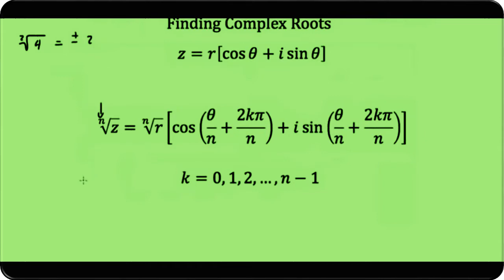Our formula for doing this: if I have the nth root of z, then we just take the nth root of our magnitude r. Then it's multiplied by cosine, and we divide our angle θ by that n.